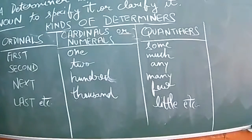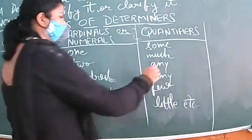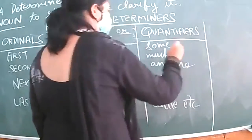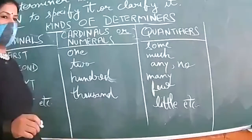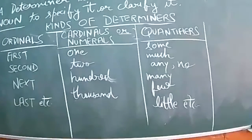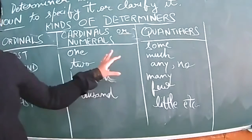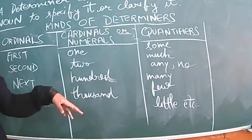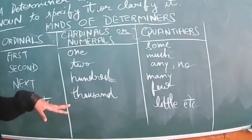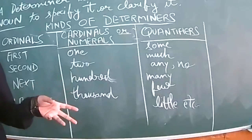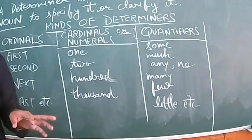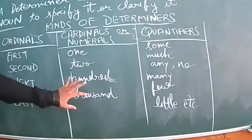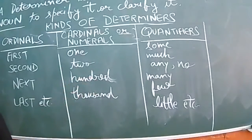'No chocolate is left in the jar' — 'no' is also a quantifier. Other examples: some, many, much, any, a few, the few, little, a little, the little — these can be varied accordingly.